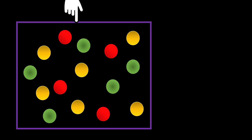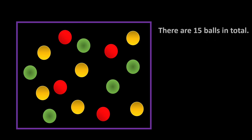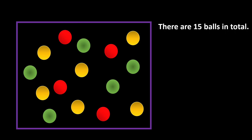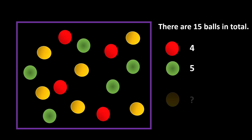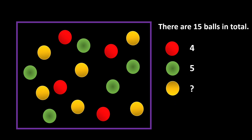Below is a packet of bowls. There are 15 bowls in total. 4 are red bowls and 5 are green bowls. And how many yellow bowls are there in the packet?